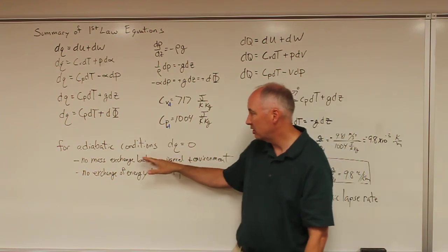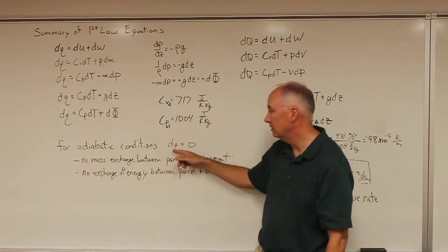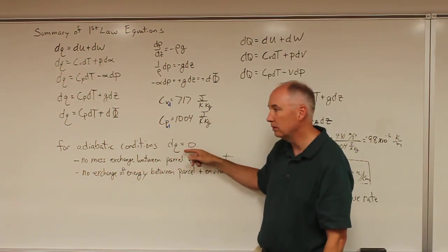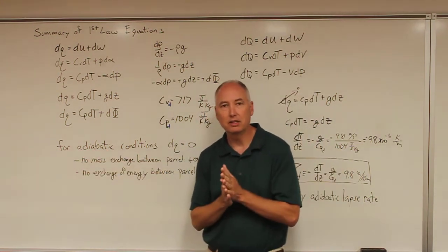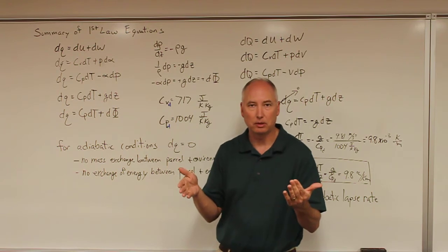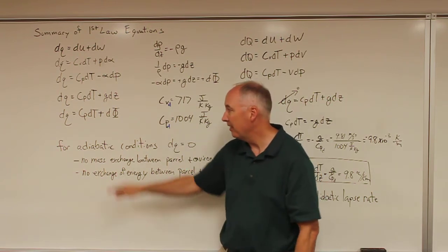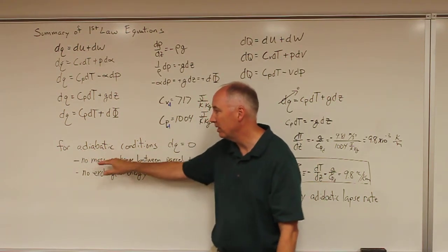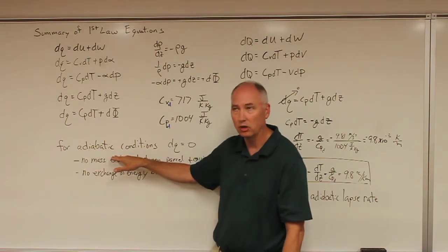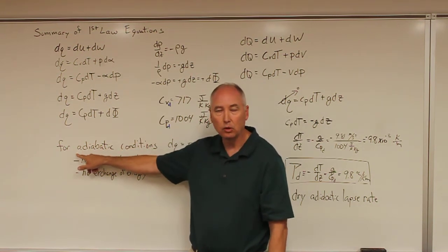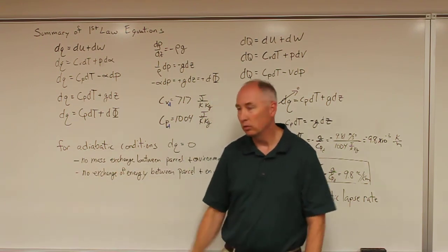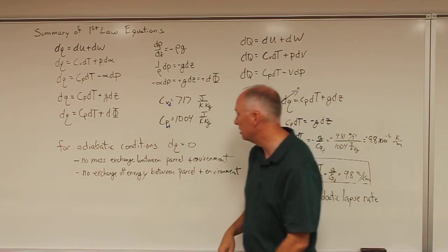And by definition, adiabatic indicates that dq is equal to zero. So let's look at this word adiabatic. So you might think of the word typical and atypical. They're exact opposites. And that's the exact same case for this. We have a diabatic heating term, q, and then we have adiabatic, which means that there's no heating, which means that dq is equal to zero.